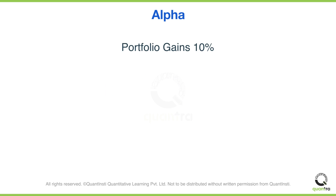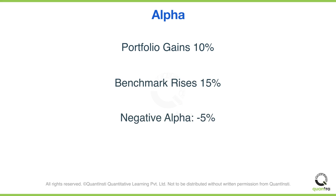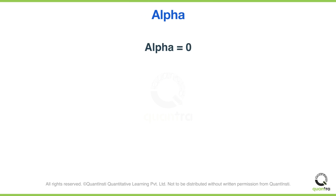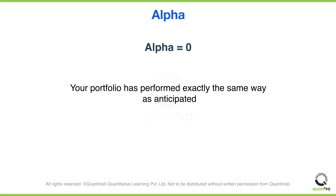On the flip side, if the portfolio gains 10% while the market surges by 15%, it means that your portfolio couldn't keep up with the market. This would result in a lower Alpha, indicating that your portfolio has underperformed the benchmark. If the Alpha is 0, it means that your portfolio has performed exactly the same way as anticipated.